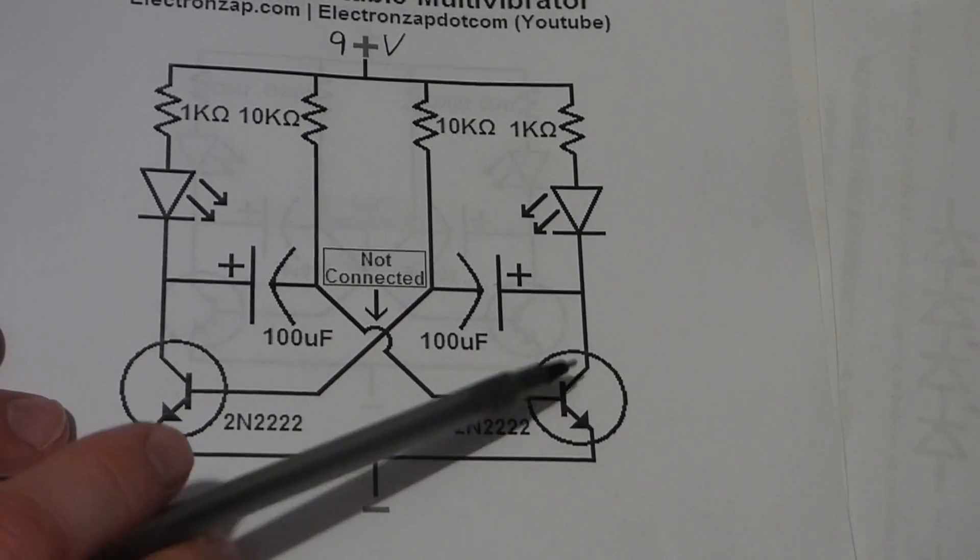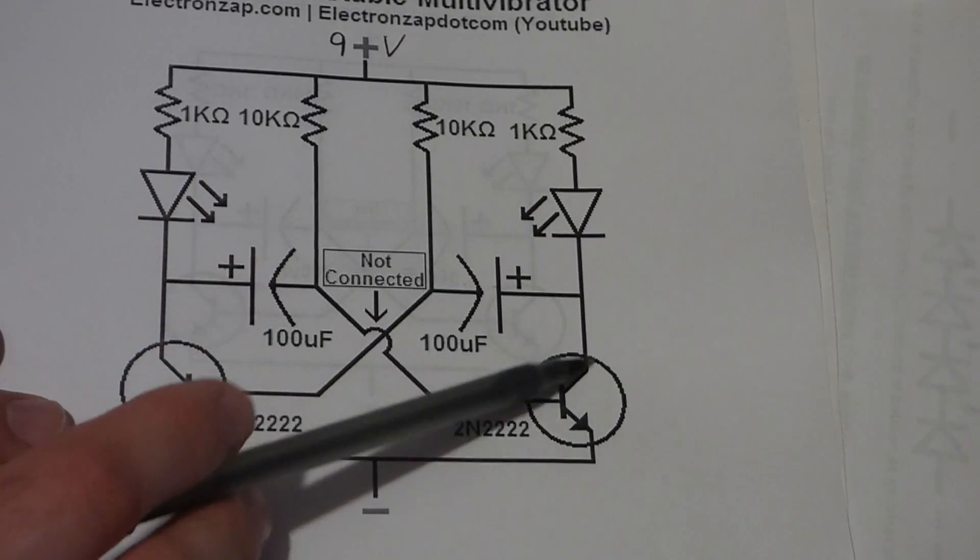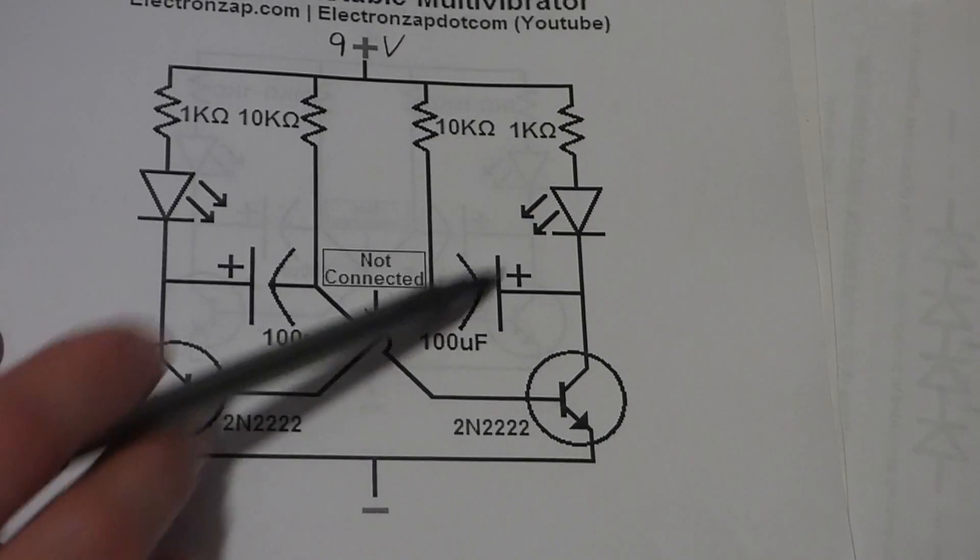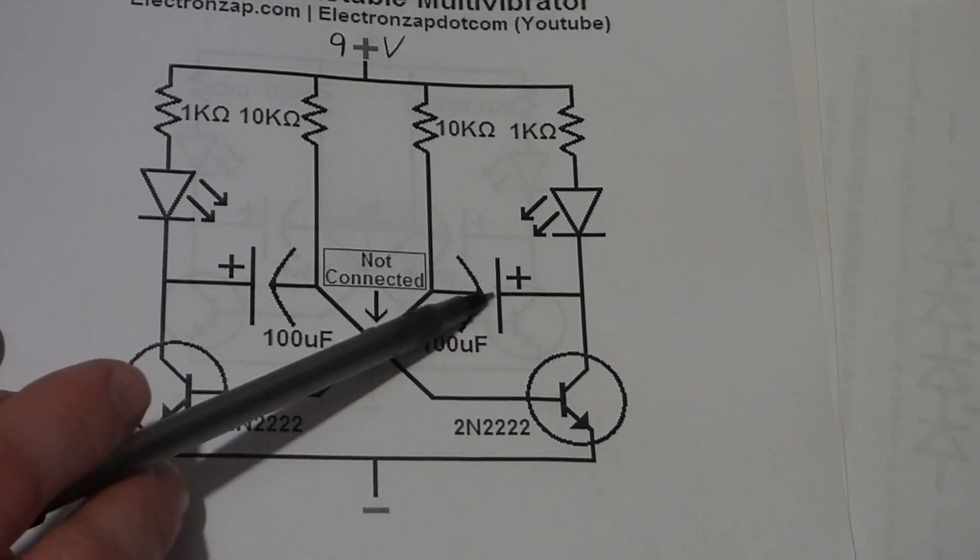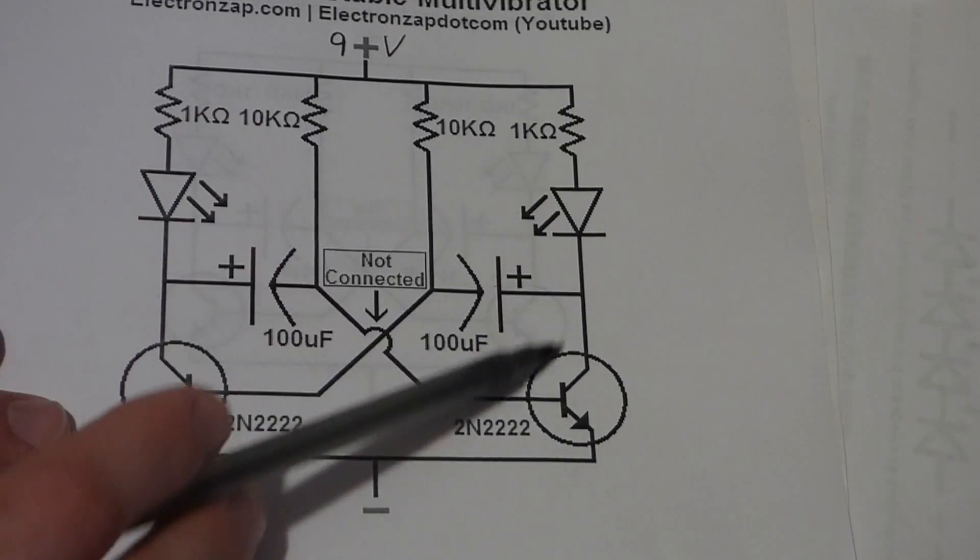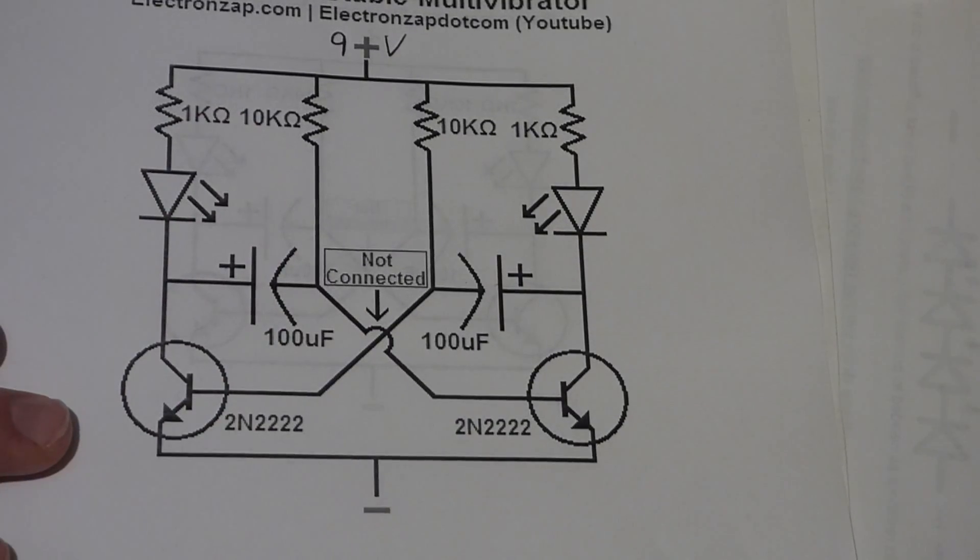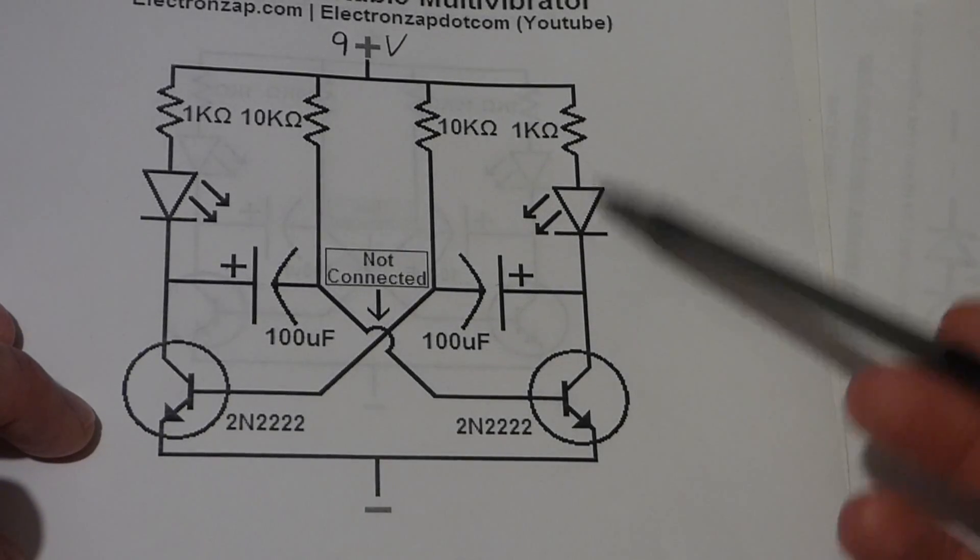So now while this transistor is on, that gives the positive current an easier path to go through the transistor to ground than to charge this capacitor. So this capacitor is not charging while this one is charging. Instead the current is going through to ground, and this LED is going to be really bright.